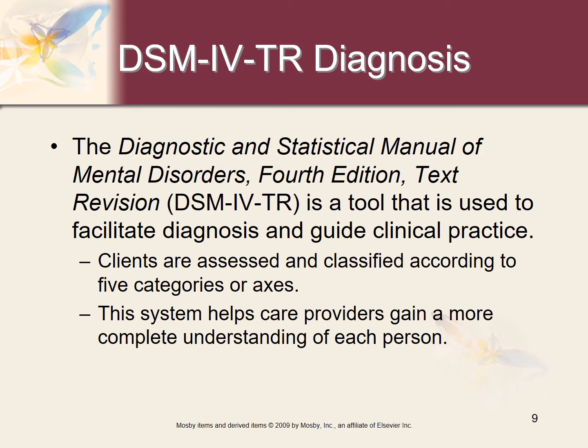The Diagnostic and Statistical Manual of Mental Health Disorders, 4th Edition, text revision, is a tool used to facilitate diagnosis and guide clinical practice. Clients are assessed and classified according to five categories or axes — look at Table 9-1 on page 93. This system helps care providers gain a more complete understanding of each person. It promotes therapeutic interventions based on individual clients, and the diagnosis of mental health problems remains the responsibility of the physician.